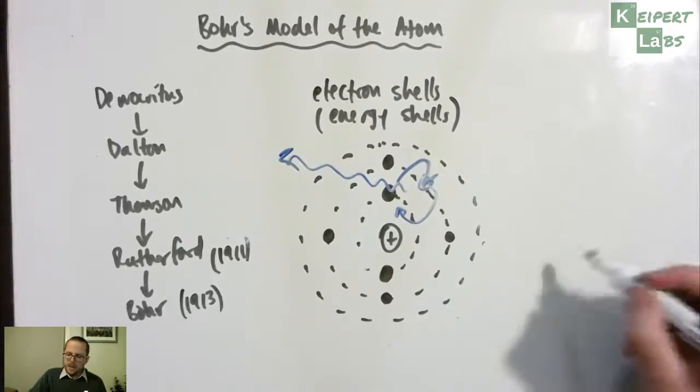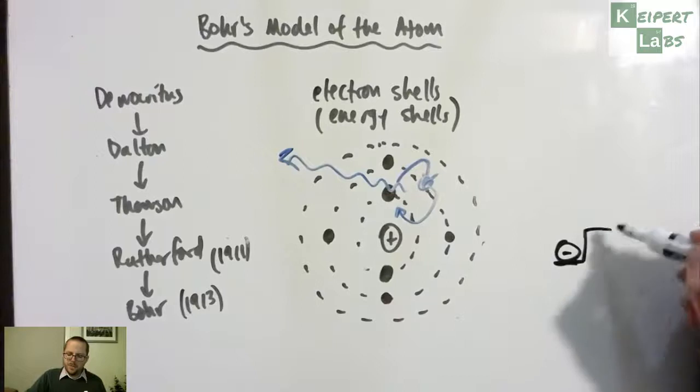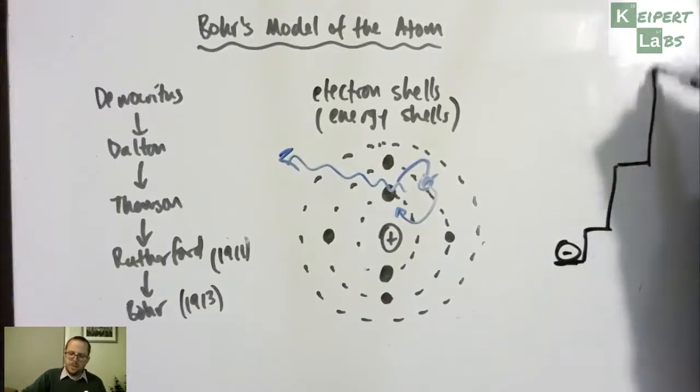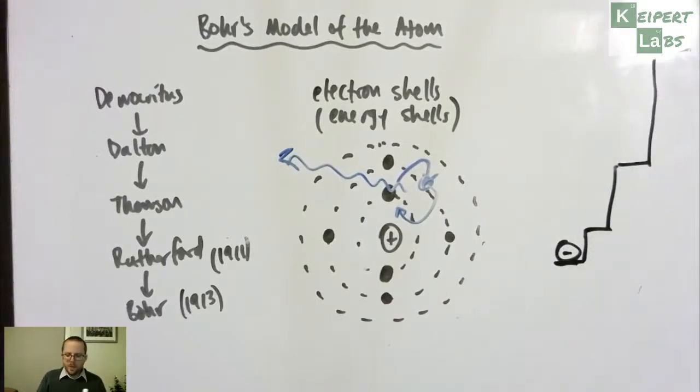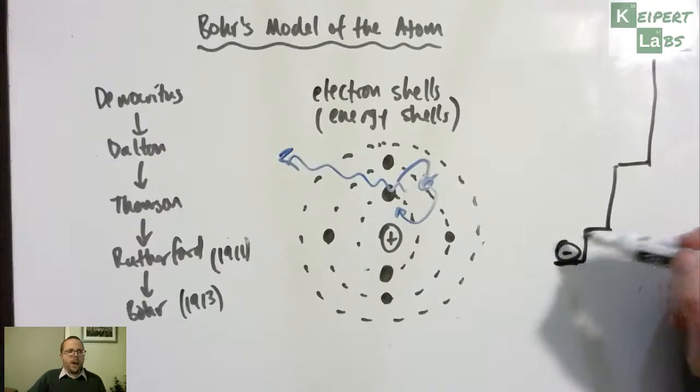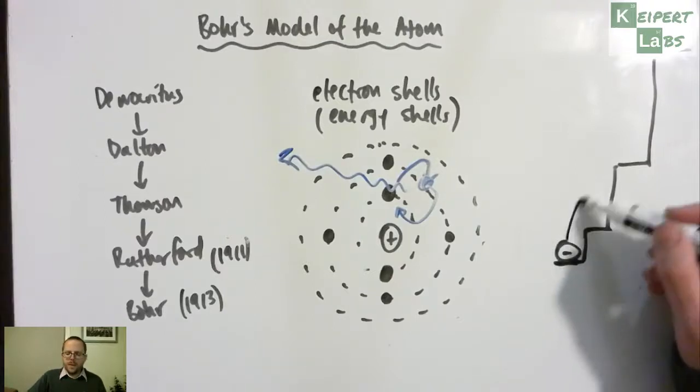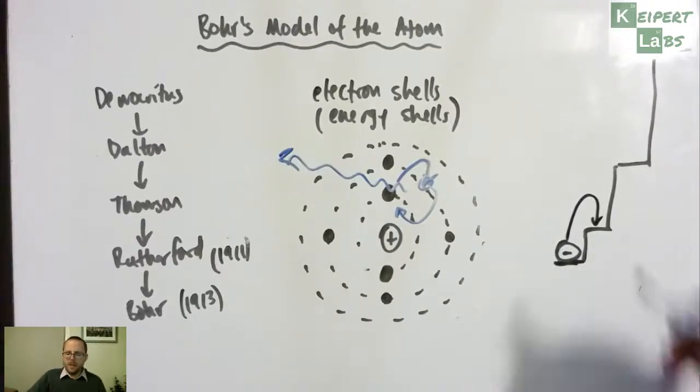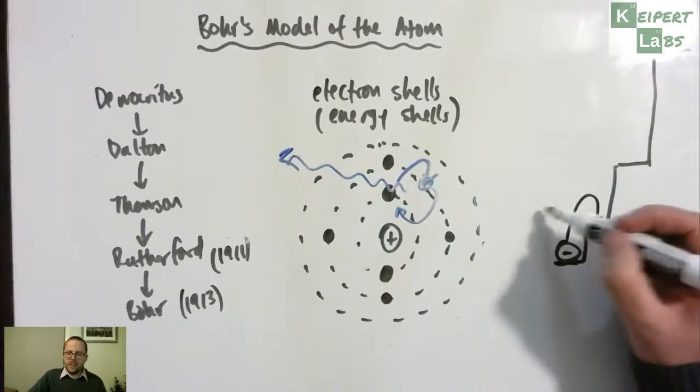So if we imagine an electron down the bottom here, a series of steps. And so we can see that we can make, just thinking about you jumping up steps as well. If we had an electron and then we want to make it jump up to a higher step, energy has to be absorbed.